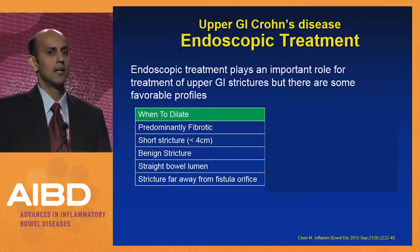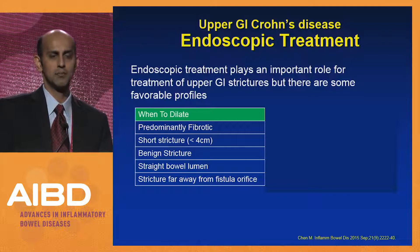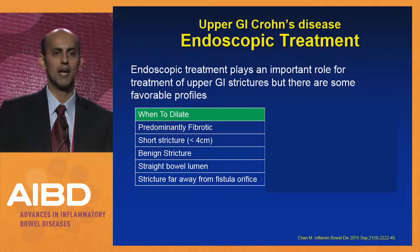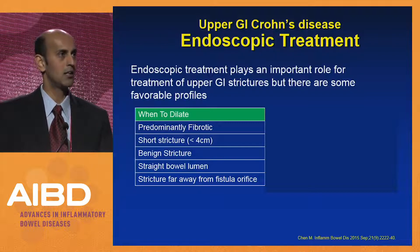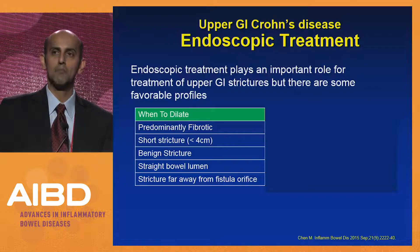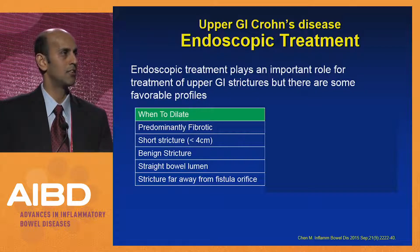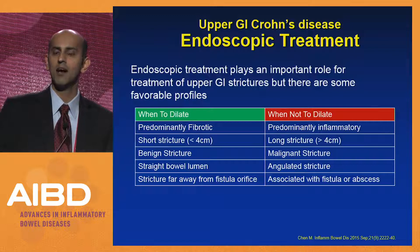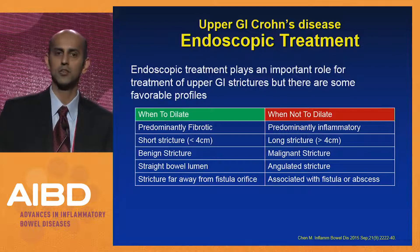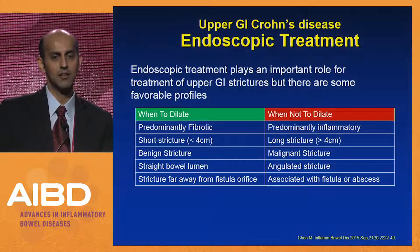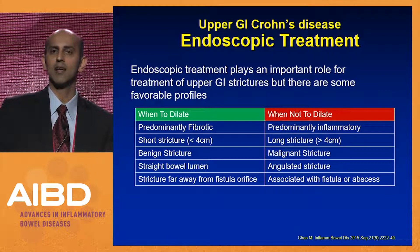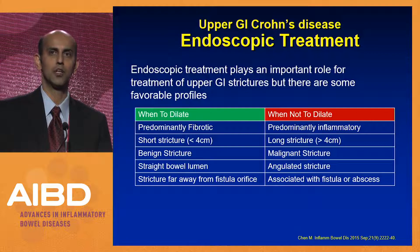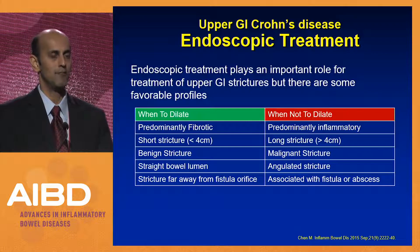Endoscopic treatment is important in managing upper GI strictures. Favorable profiles for endoscopic dilation include: predominantly fibrotic stricture, short stricture defined as less than four centimeters, benign stricture, straight bowel lumen, and a stricture far away from a fistula orifice. Conversely, dilation may be less efficacious when the stricture is predominantly inflammatory, long, malignant, very angulated, or associated with fistulas or abscesses — in those cases, extreme caution is warranted.